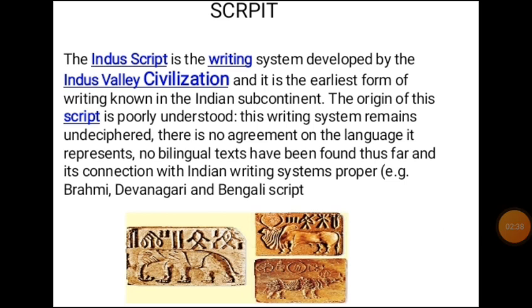The Indus script is the written system developed by the Indus Valley civilization. It is the earliest form of writing known in the Indian subcontinent. This writing system remains unprecedented, and its origin is poorly understood. They used pictographs — they communicated with each other through pictures — and this writing system used no known language.